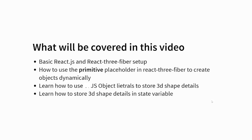In this video we're going to be using a basic React and React Three Fiber setup. I'm going to introduce you to a primitive placeholder — it's a helper component in React Three Fiber that you can use to create objects dynamically, which is quite powerful. We'll also be using object literals to store 3D shape details, and learn how to store that shape detail in a state variable so you can interactively change it as you click on the buttons.